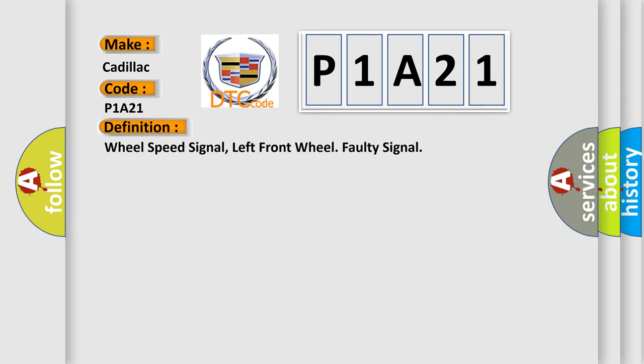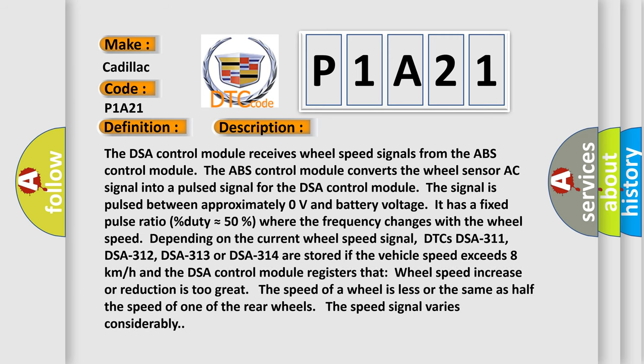And now this is a short description of this DTC code. DSA 311, DSA 312, DSA 313 or DSA 314 are stored if the vehicle speed exceeds 8 km per hour and the DSA control module registers that wheel speed increase or reduction is too great. The speed of a wheel is less or the same as half the speed of one of the rear wheels. The speed signal varies considerably.